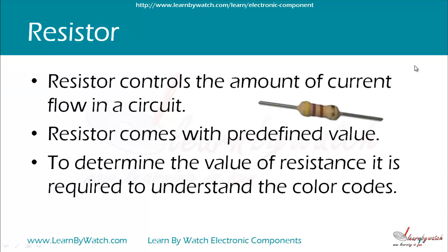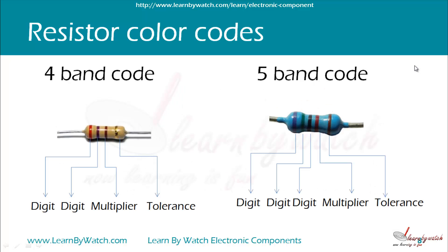Resistors are used to control current flow in a circuit. It has a predefined value. To determine resistance of a resistor, it is required to understand the color codes. We can use a multimeter also, but it is gonna take some time. Generally, you will find a 4-band code on a resistor, but sometimes you can find a 5-band code too.